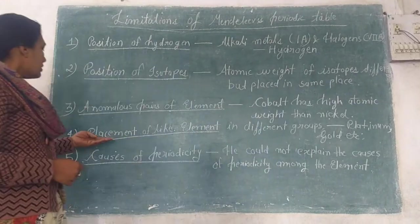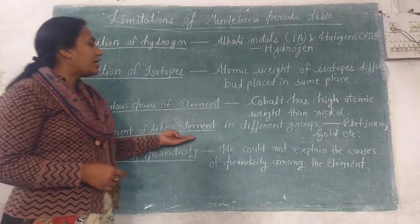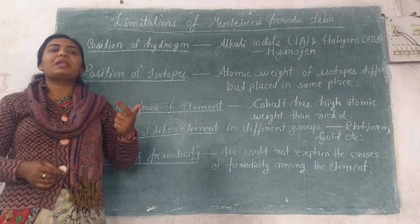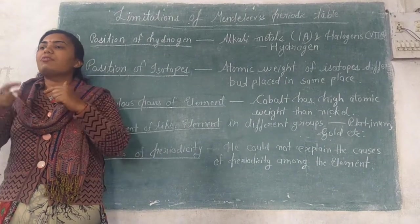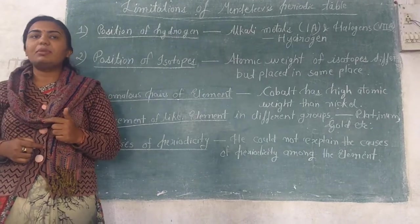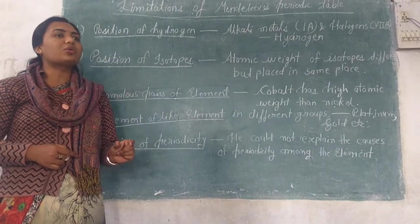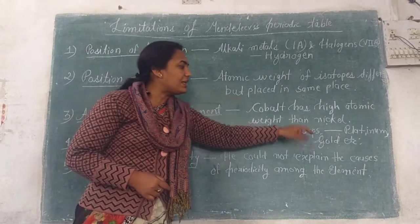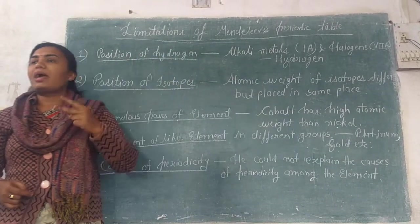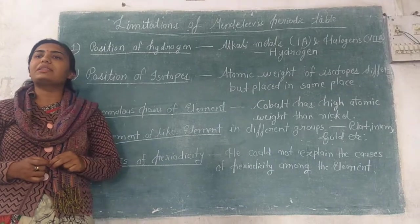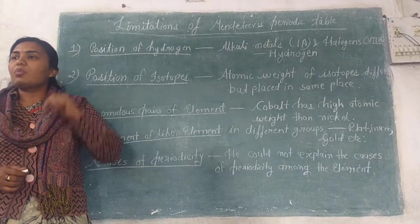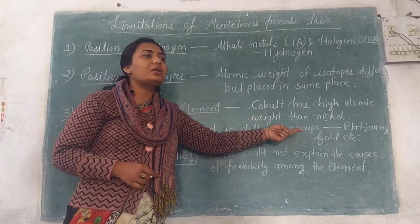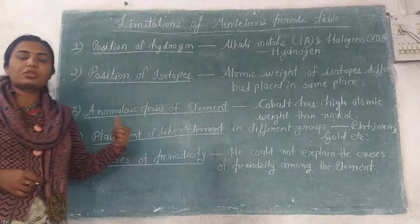The fourth limitation is the placement of like elements in different groups. We have seen that elements with similar physical and chemical properties should be in the same group. But even though some elements have the same kind of physical and chemical properties, Mendeleev placed both of these elements in different groups. So this is the fourth limitation.